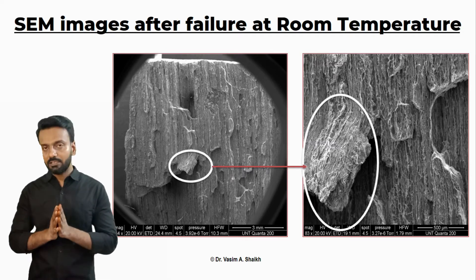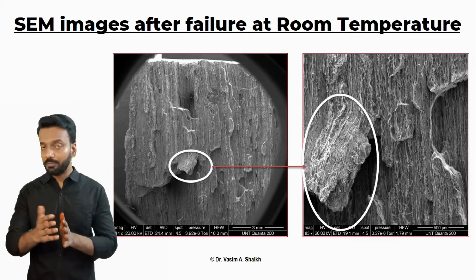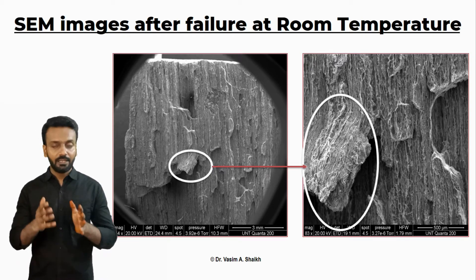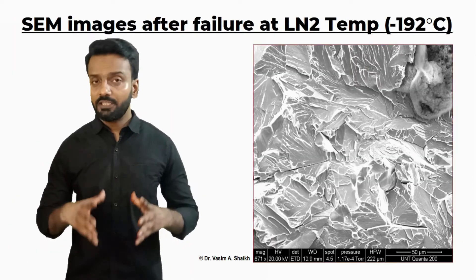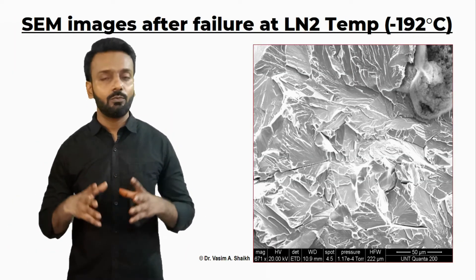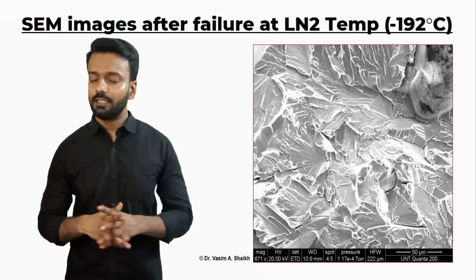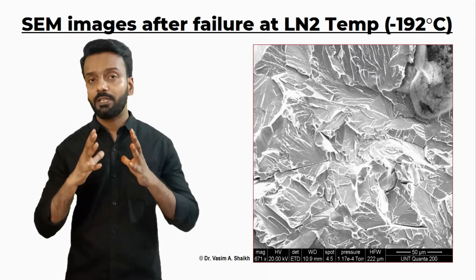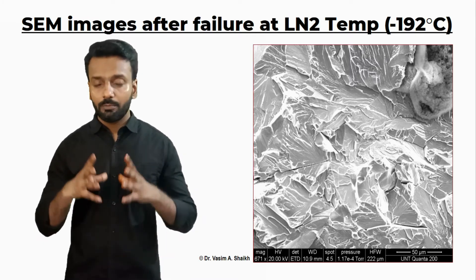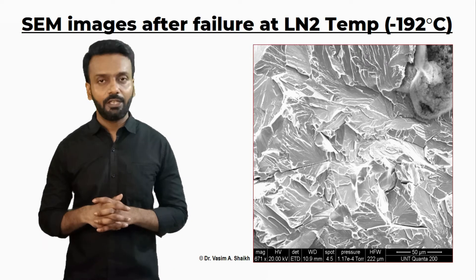Now let us compare this image with the next image at liquid nitrogen temperature — what happens when we do impact testing at that temperature. This image has been impact tested at around minus 192 degrees Celsius, that is liquid nitrogen temperature. Clearly, we can see that the material has failed because of brittle fracture.